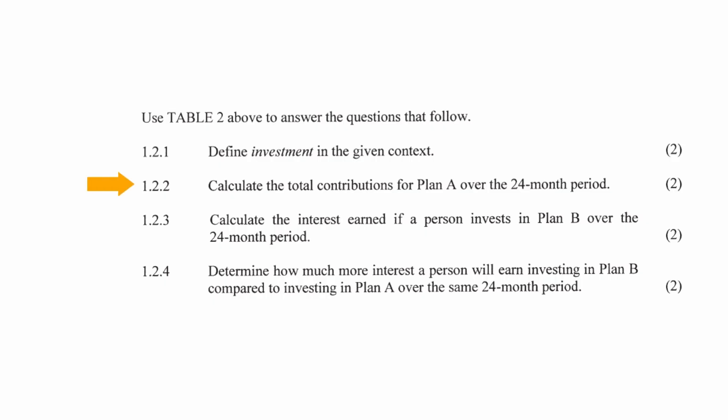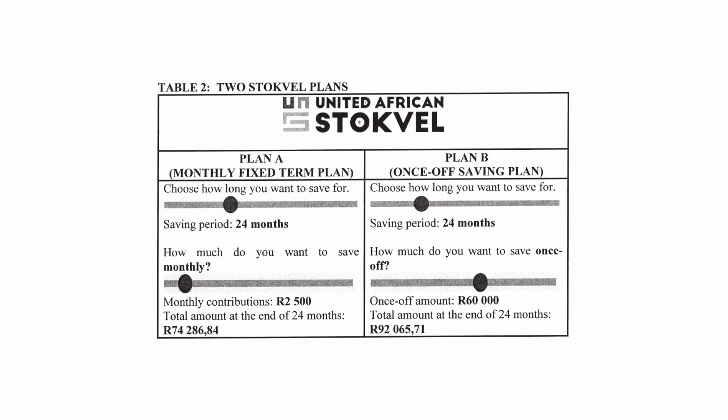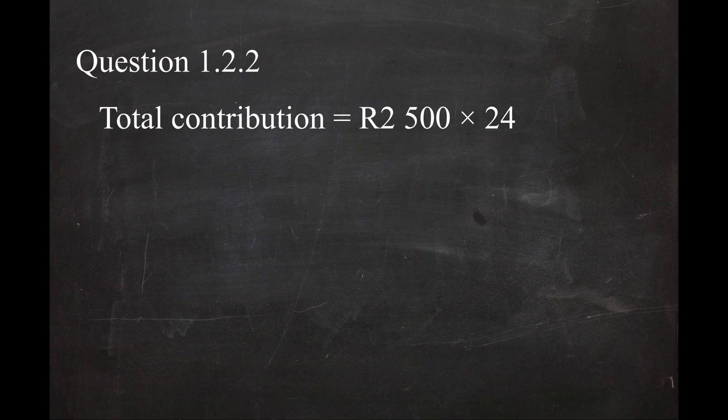In question 1.2.2, you are instructed to calculate the total contribution for Plan A over a 24-month period. The monthly contribution is R2,500 for 24 months, so the total contribution equals R2,500 multiplied by 24 months, which equals a total contribution of R60,000.